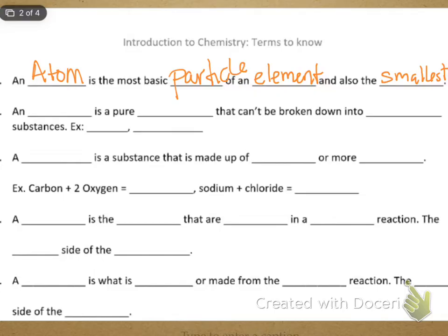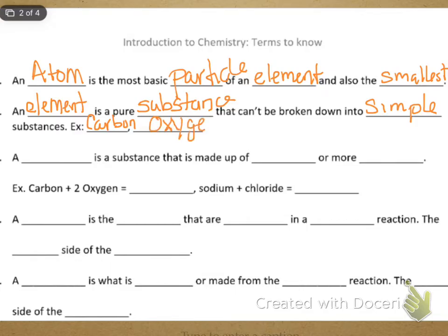Your next term is an element. An element is a pure substance that can be broken down into simple substances. An example is carbon and another example would be oxygen. Those are both elements. They're found on the periodic table of elements. We've talked about both of these elements before. As a matter of fact, you have had this definition before when we talked about minerals.